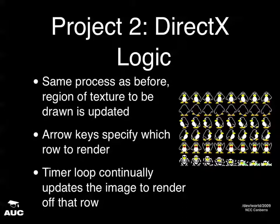The DirectX logic: same process of specifying the region to render. However, arrow keys control which row of the animation sprite you want to render. Pressing down renders the first animation row (row zero), going up renders row one, moving left is row two, and so on. Once on that row, a timer loop continually updates the column being rendered, giving the fluid movement while you perform that action.